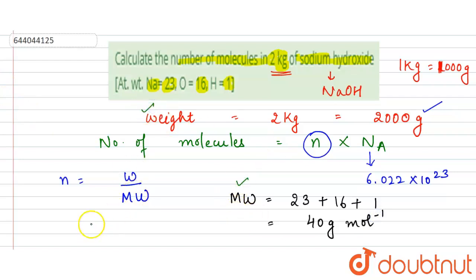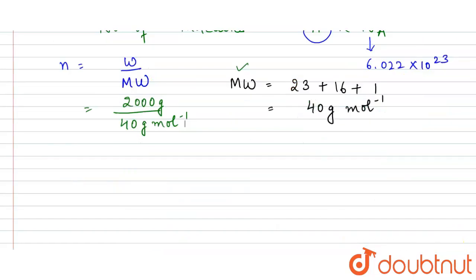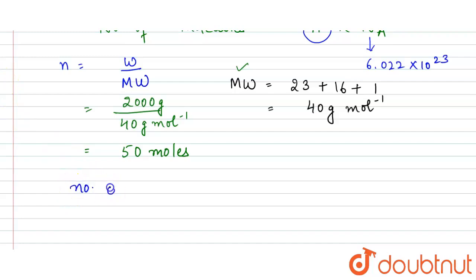Putting in the values, number of moles = 2000 grams ÷ 40 grams per mole = 50 moles.